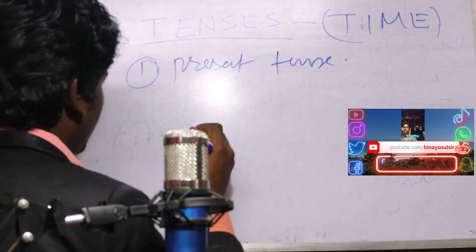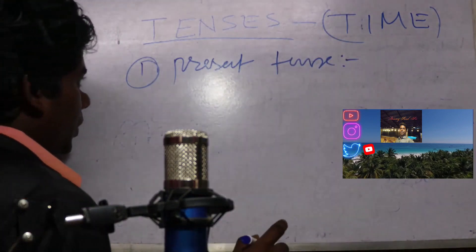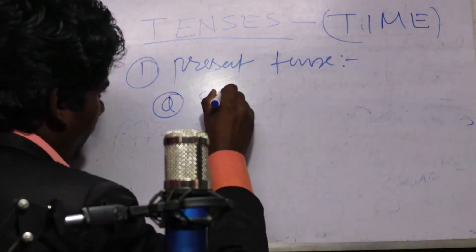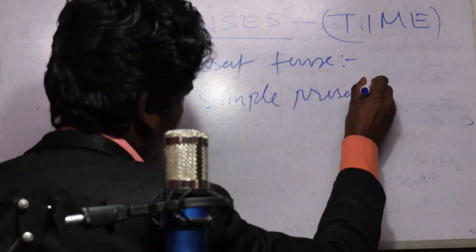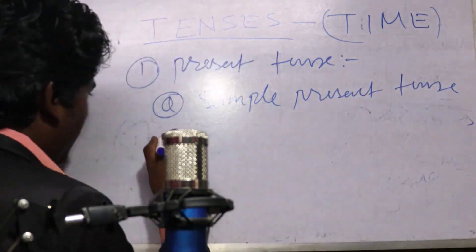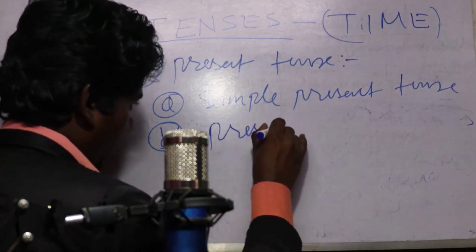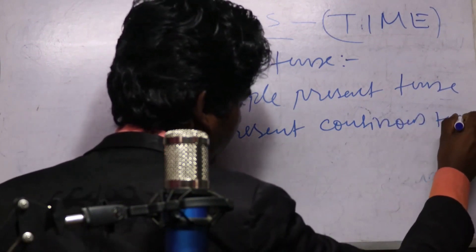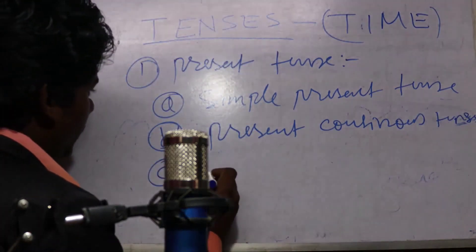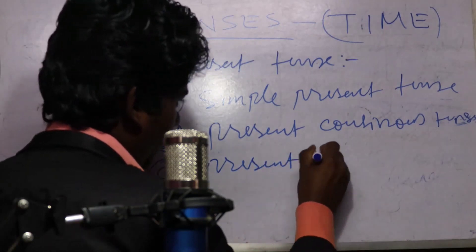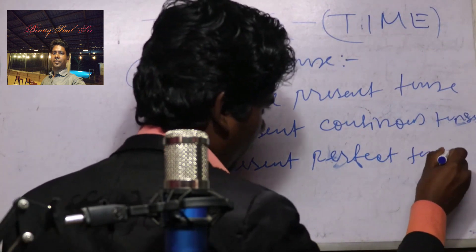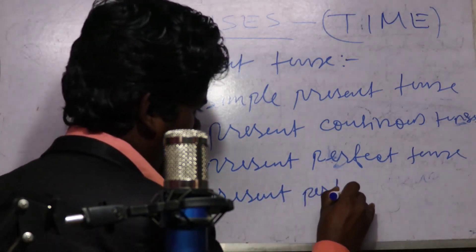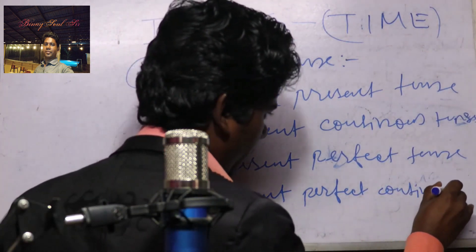Looking at the board, present tense has four types: A) simple present tense, B) present continuous tense, C) present perfect tense, and D) present perfect continuous tense.